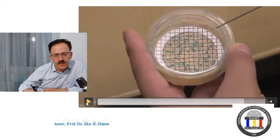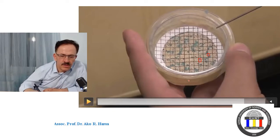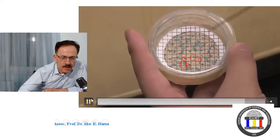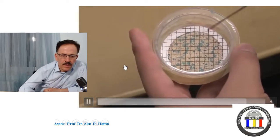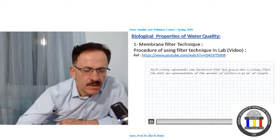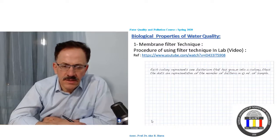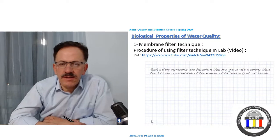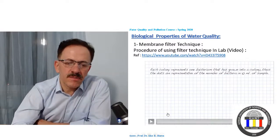For total coliform bacteria, you can see blue and red dots. Count the dots: one, two, three, four, and so on. Each colony represents one original bacterium. Once you have the total count, be aware that since we used only 10 mL of sample diluted to 100 mL, the number of colonies must be multiplied by 10 to get the actual concentration per 100 mL.